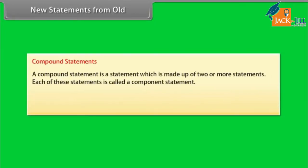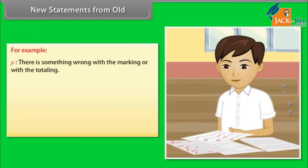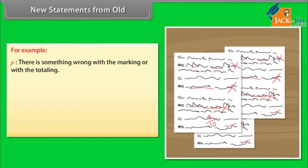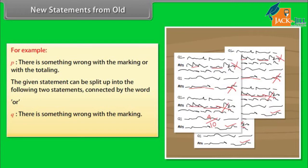A compound statement is a statement which is made up of two or more statements. Each of these statements is called a component statement. By the use of connective words like 'and' or 'or', we can combine two statements to form a compound statement. For example, P is a statement that there is something wrong with the marking or with the totaling. Q is the statement that there is something wrong with the marking, and R is the statement that there is something wrong with the totaling.